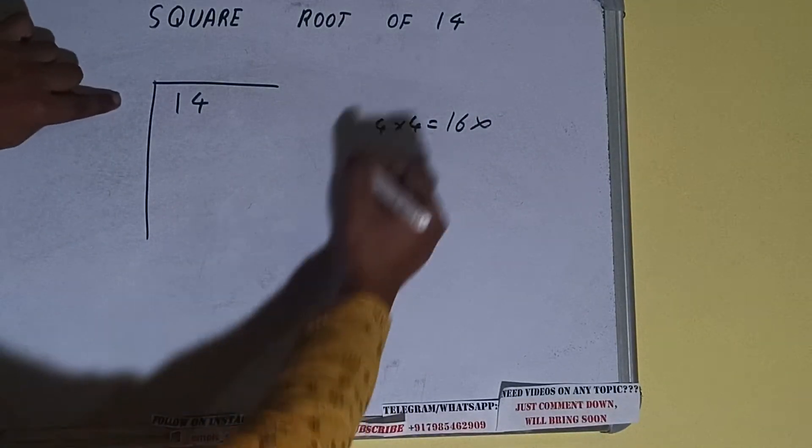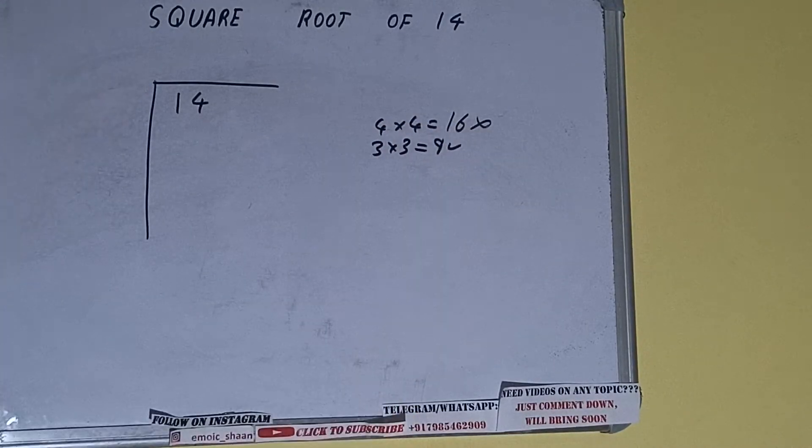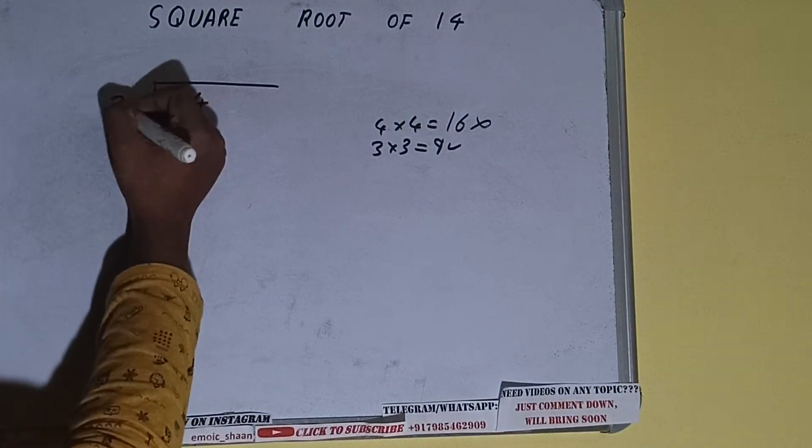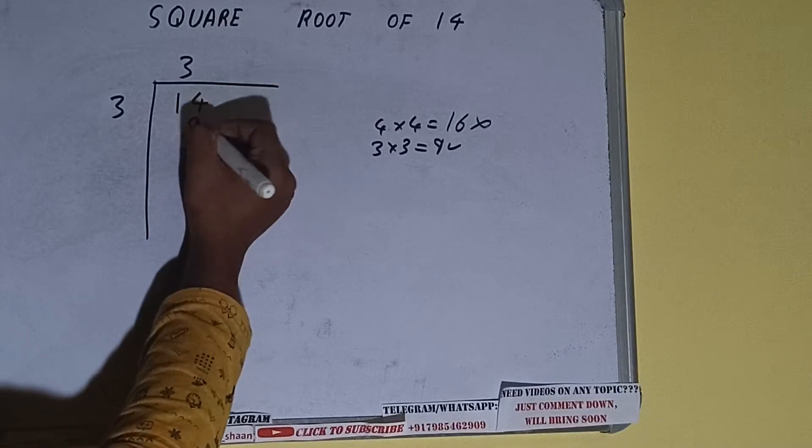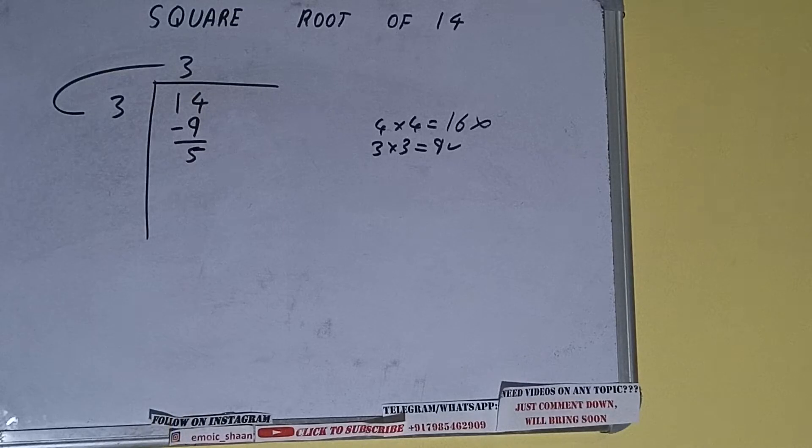If we write 3 here and 3 here, we'll be having 9, which is good to use. So 3 here and 3 here, 9 subtract, 5 will be left. We did 3 into 3, so add both. So 3 plus 3 will be 6.